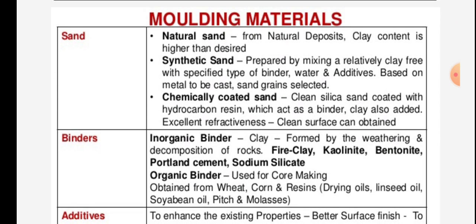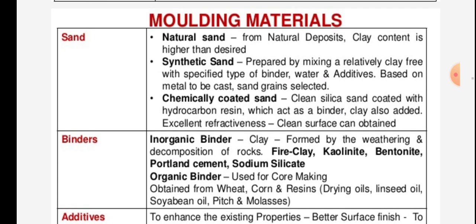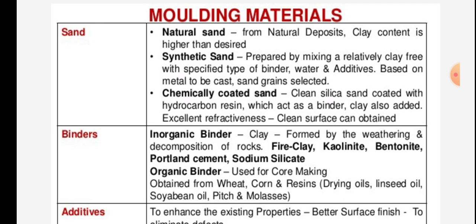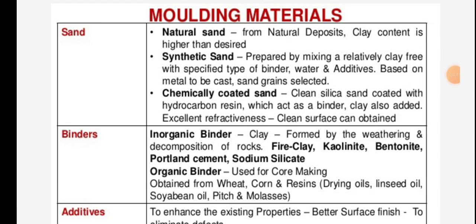Molding material - Sand. Natural sand: obtained from natural deposits; clay content is higher than desired. Synthetic sand: prepared by mixing a relatively clay-free sand with specified types of binder, water, and additives based on the metal to be cast, with sand grains selected accordingly. Chemically coated sand: clean silica sand coated with hydrocarbon resin, which acts as a binder; clay is also added. Excellent refractiveness and a clean surface can be obtained.